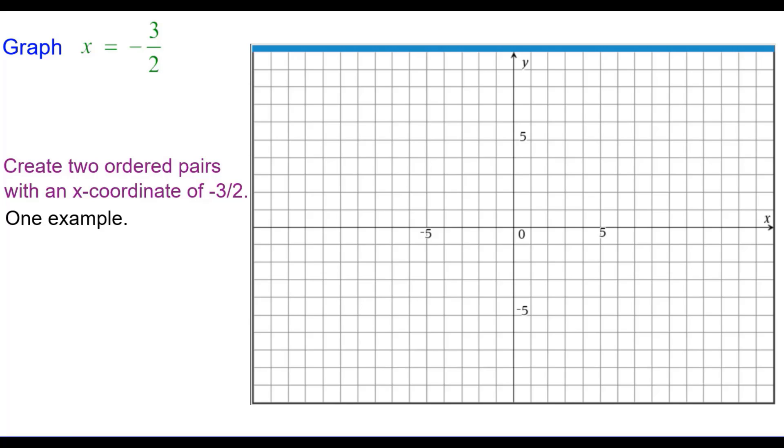One example of two ordered pairs would be negative 3 halves comma 0, negative 3 halves comma 4. Notice we like to use the x-intercept when at all possible.